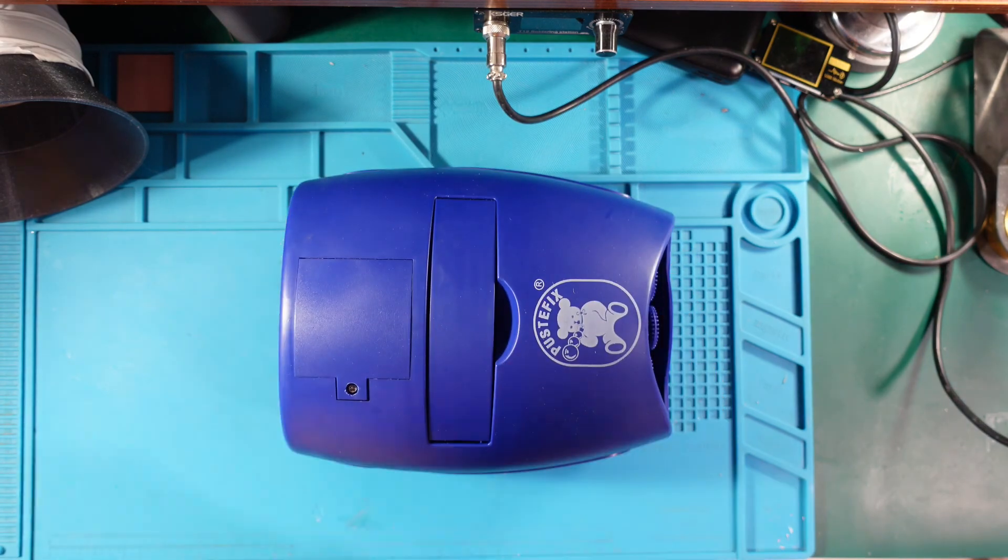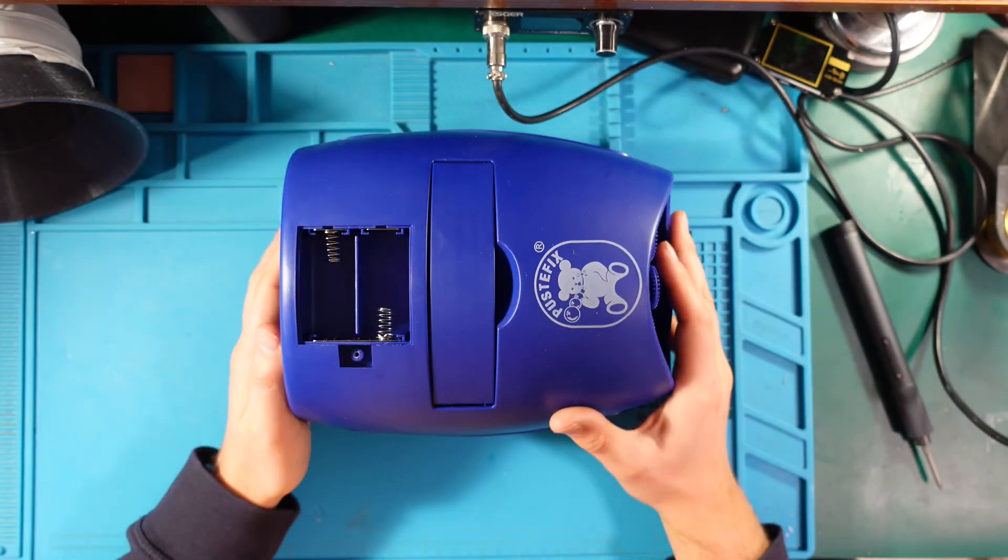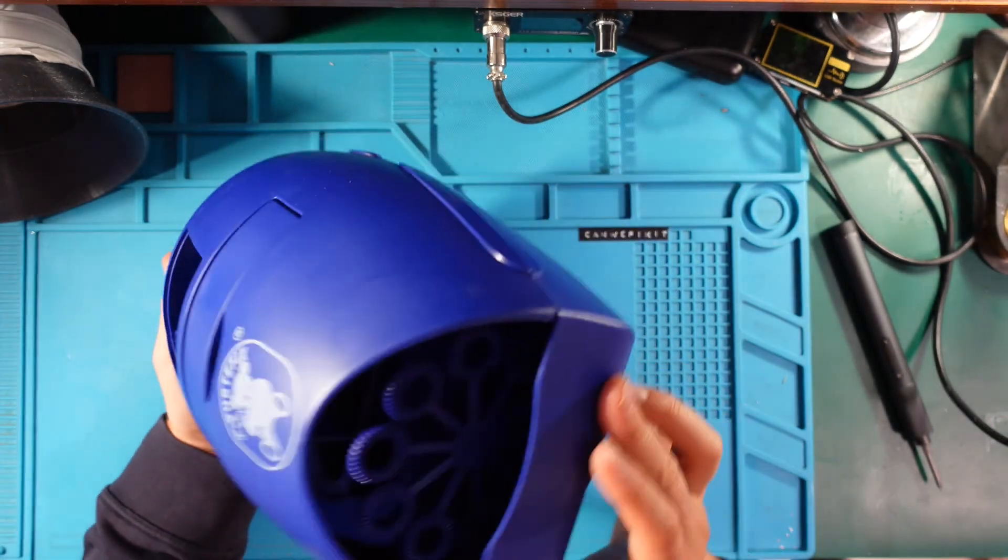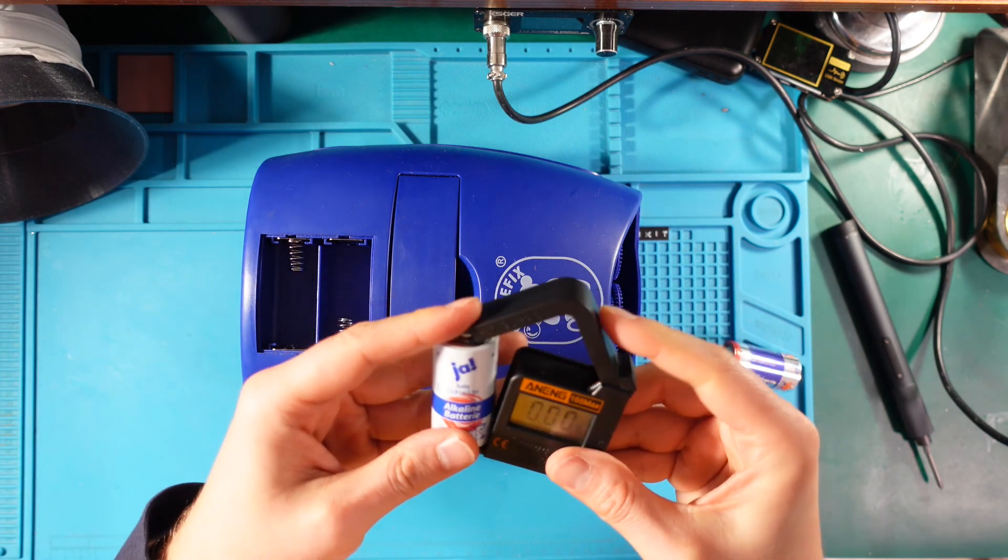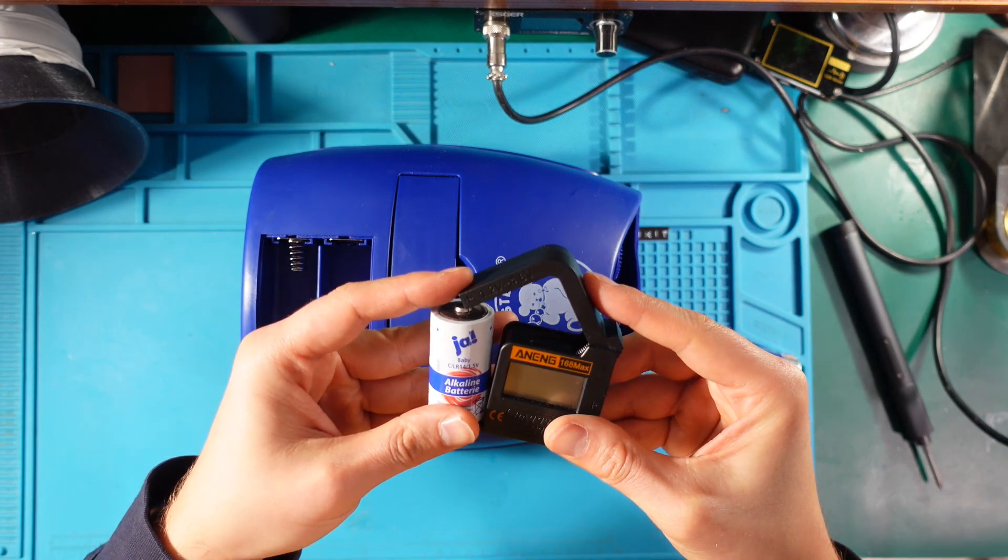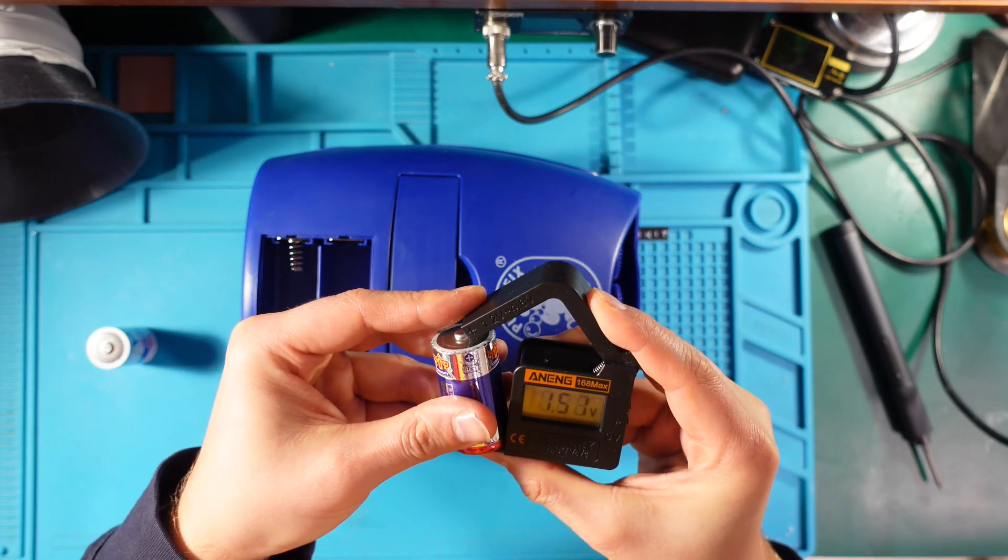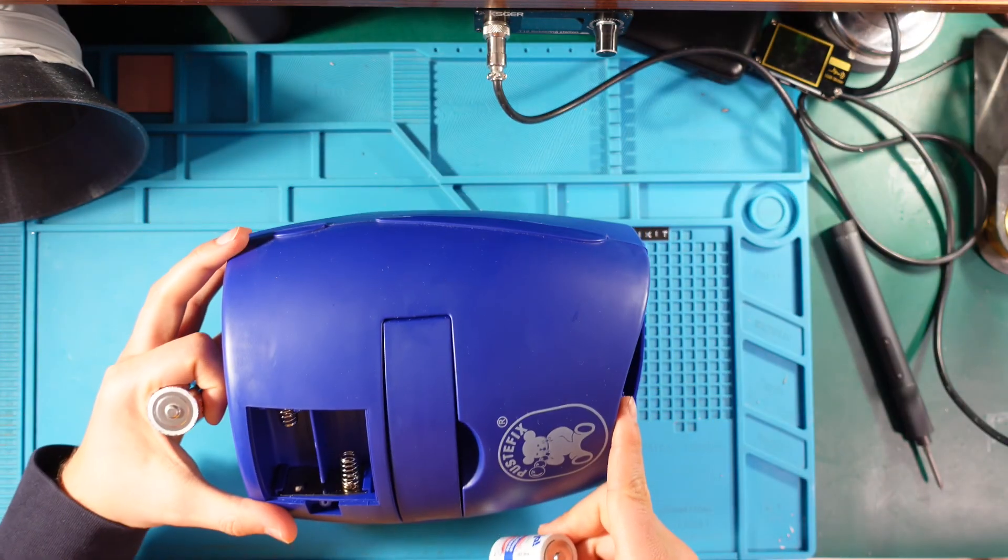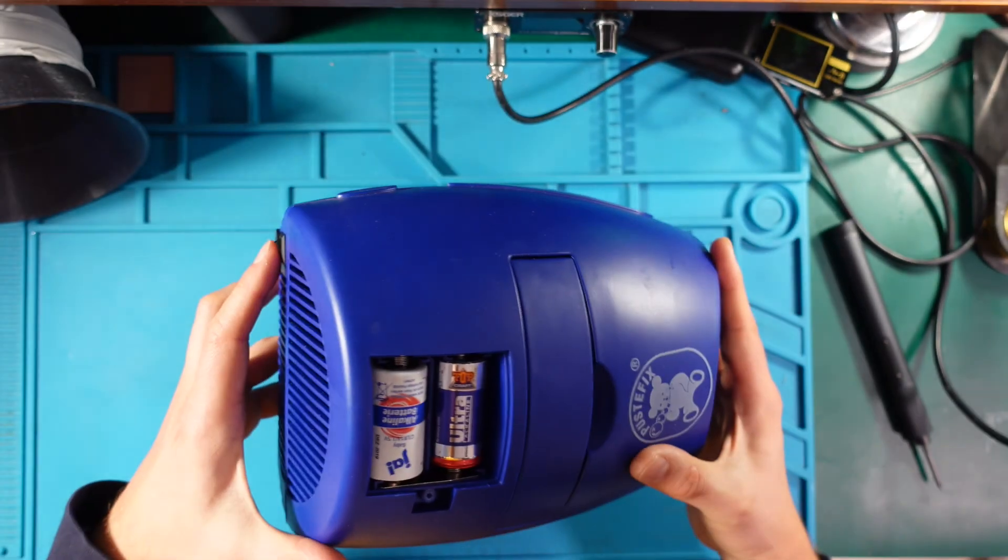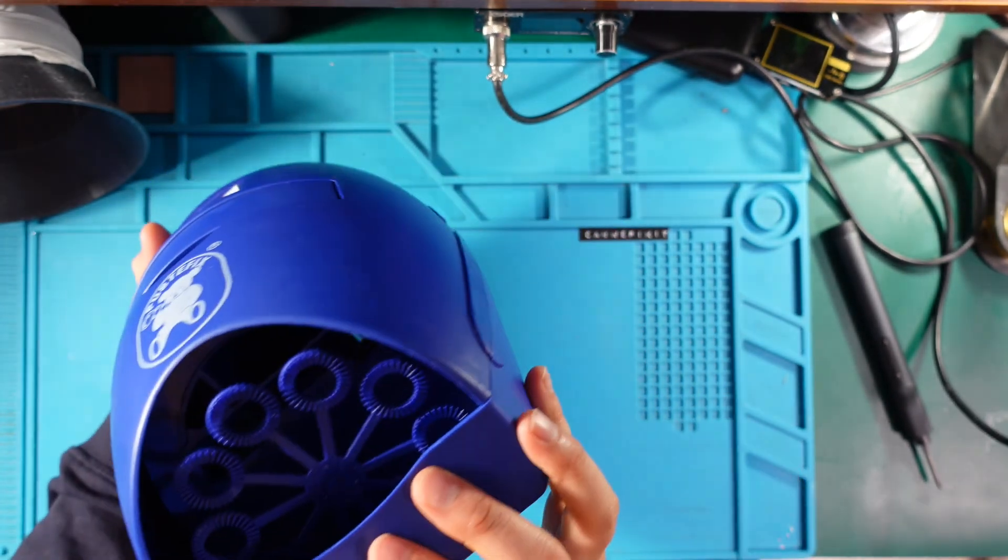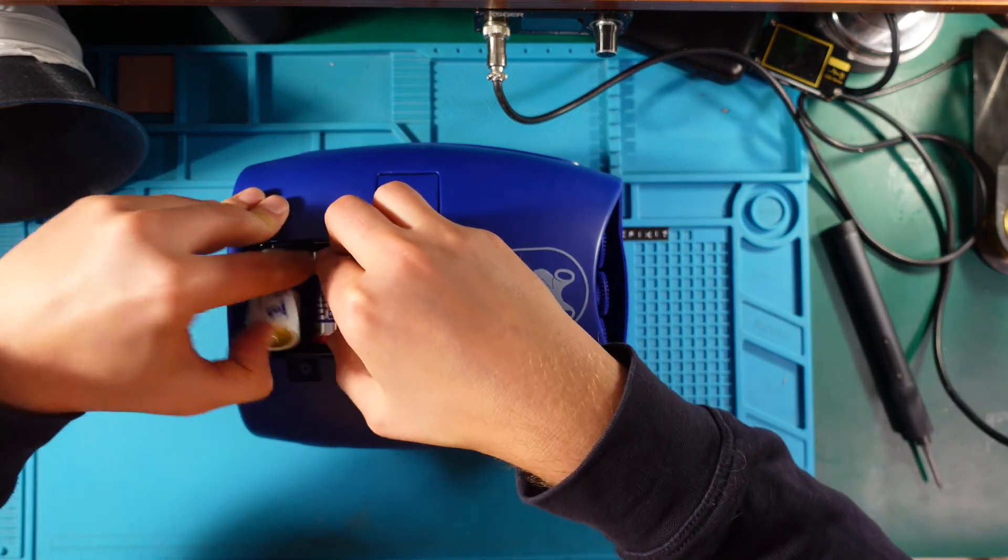First, let's open the battery compartment. C-size batteries. I need more C-size batteries in general - I just have two. Let's quickly measure the batteries: 1.51 volts and the second one, 1.51 volts as well. Let's try to put them in. Okay, I already flipped the switch - nothing's happening. So the description is accurate - it's not turning on.